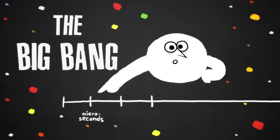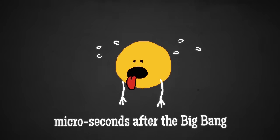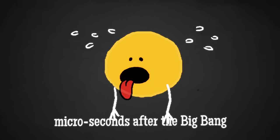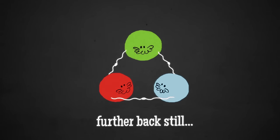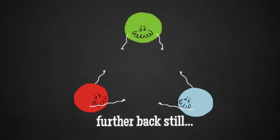Further back, microseconds after the Big Bang, and the protons and neutrons were only just beginning to form from quarks, one of the fundamental building blocks of the standard model of particle physics. Further back still, and the energy was too great even for the quarks to stick together.